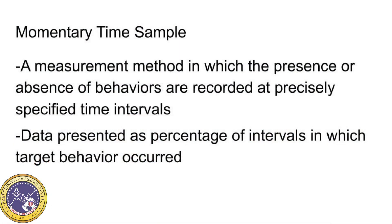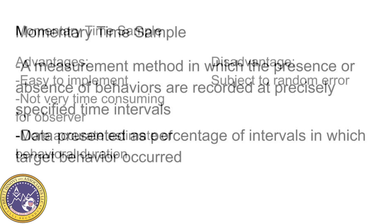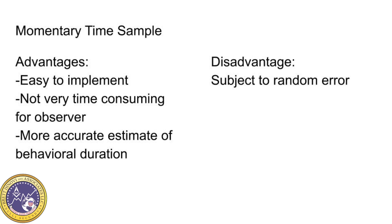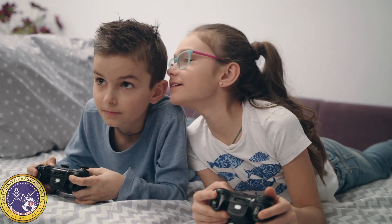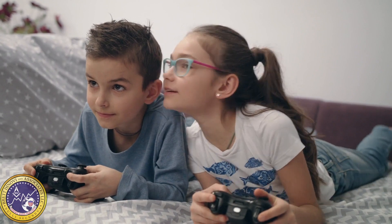Momentary time sampling is a measurement method in which the presence or absence of behaviors are recorded at precisely specified time intervals. Data are presented as a percentage of intervals in which target behaviors occur. Some advantages are that it's easy to implement, not very time consuming for the observer, and provides a more accurate estimate of behavioral duration than partial interval or whole interval recording. Some disadvantages are that it may be subject to random error. In general, momentary time sampling has been shown to be the most accurate discontinuous measurement system. In the Hanley et al. article, they found less than a 5% difference in behavioral estimates when intervals were between 5 seconds and 120 seconds. It is also recommended for measuring behaviors targeted for increase, but it may be difficult to capture low rates of behavior.